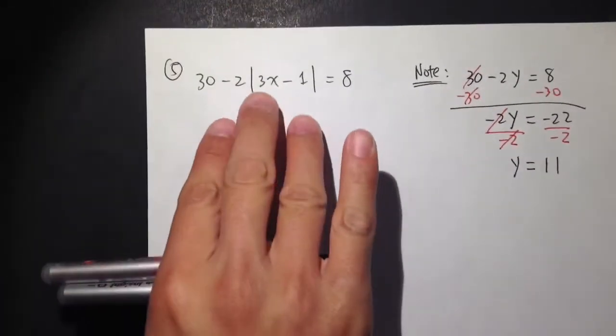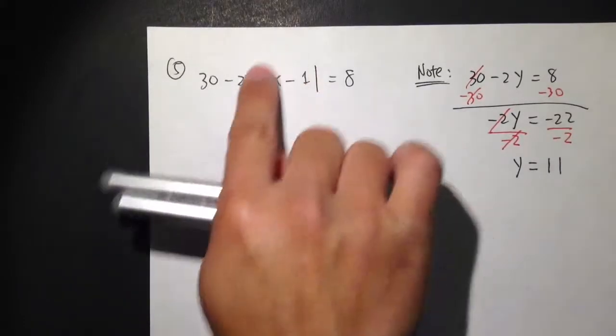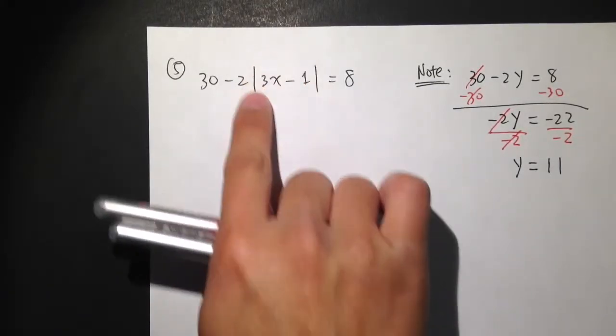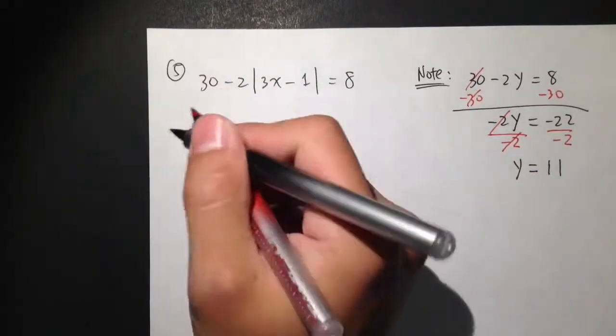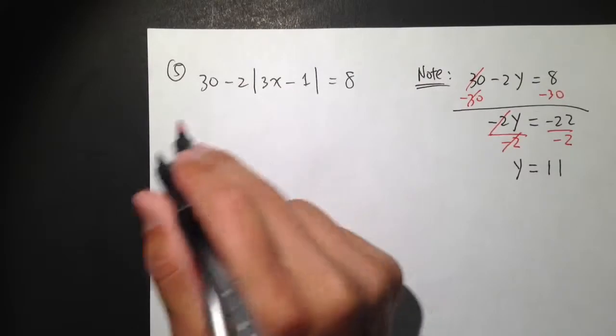And that's exactly what we need to do right here to isolate this absolute value. This absolute value is kind of like a whole quantity by itself. So do not just do 30 minus 2 and say that's 28.